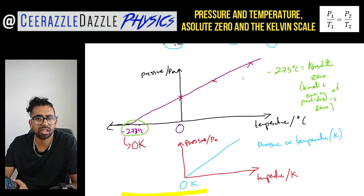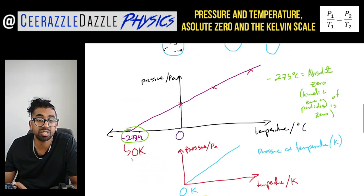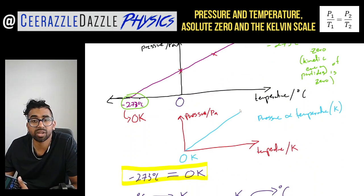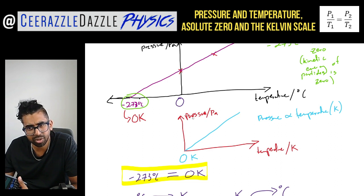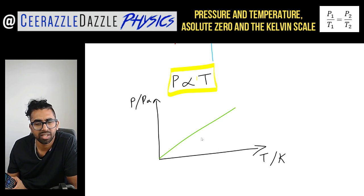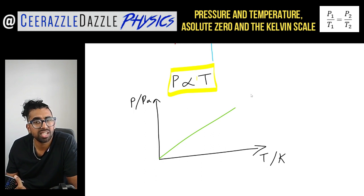To summarise: a graph of pressure versus temperature in degrees Celsius is a straight line that doesn't pass through the origin. Extrapolating the line backwards to where pressure is zero gives absolute zero, the point at which particles have zero kinetic energy. This is the starting point for the Kelvin scale — zero Kelvin. Pressure is directly proportional to temperature when temperature is in Kelvin, giving a graph that passes through the origin.